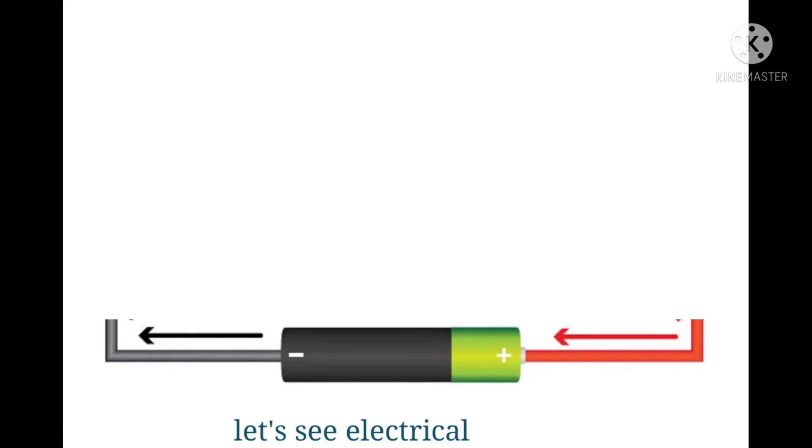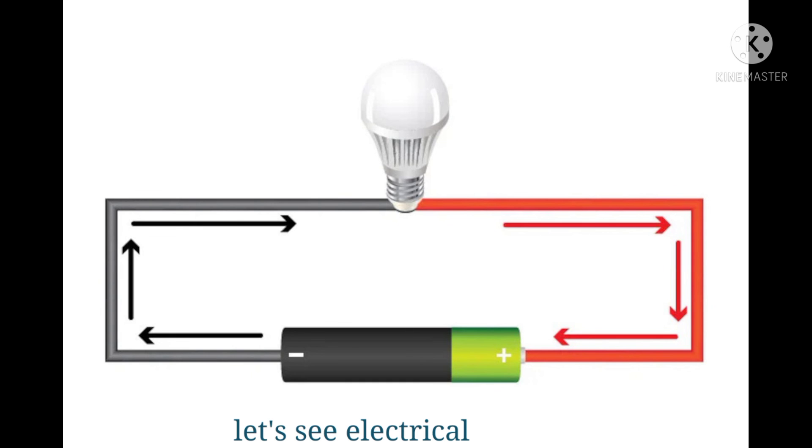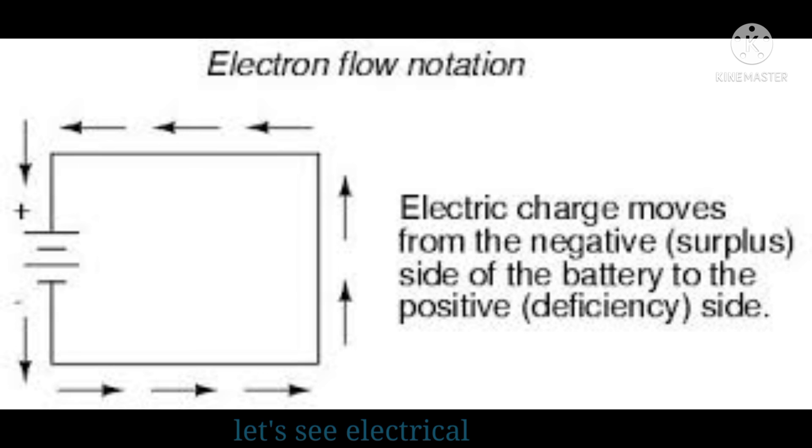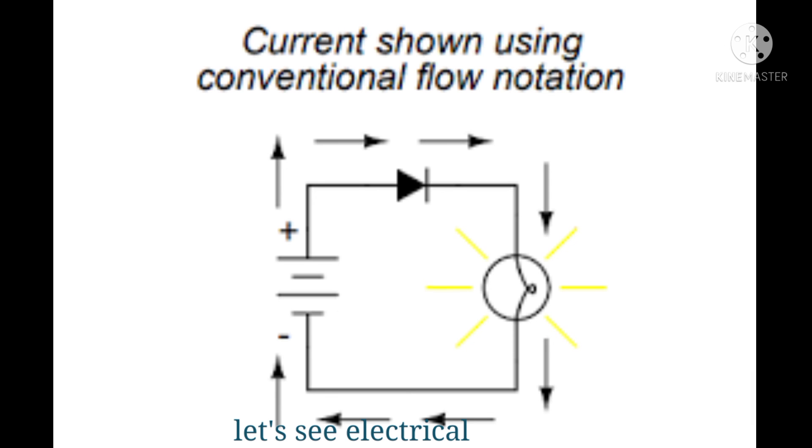The battery has higher potential, and at the same time, the light has very low potential. Now the electron tries to escape from high potential to low potential. This is the purpose of voltage—to move the electron.